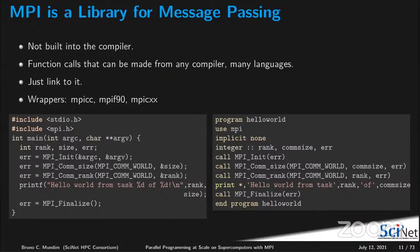MPI is a library for message passing — it is not part of the compiler. You make function calls that can be used from any compiler or many languages; all you have to do is link your code to the MPI library. To help with that there are compiler wrappers: mpicc for C, mpif90 for Fortran, and mpicxx for C++. Here's an example of a hello world program in C and Fortran using MPI function calls, including MPI_Comm_size and MPI_Comm_rank.